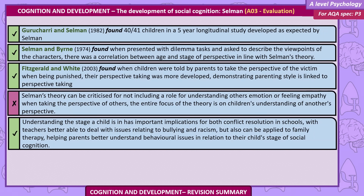Evaluations. Guruchari and Selman (1982) found 40 out of 41 children in a 5-year longitudinal study developed as expected by Selman. Selman and Byrne (1974) found that when presented with dilemma stories and asked to describe the viewpoints of the characters, there was a correlation between age and stage of perspective in line with Selman's theory. Fitzgerald and White (2003) found that when children were told by parents to take the perspective of the victim when being punished, their perspective taking was more developed, demonstrating parenting style is linked to perspective taking. Selman's theory can be criticised for not including a role for understanding others' emotions or feeling empathy. Understanding the stage a child is in has important implications for conflict resolution in schools and can also be applied to family therapy.